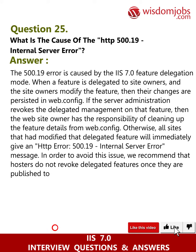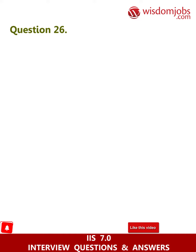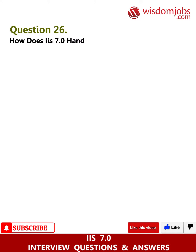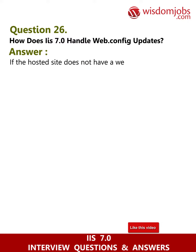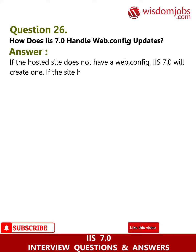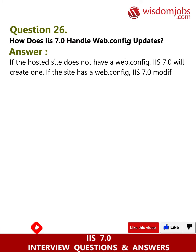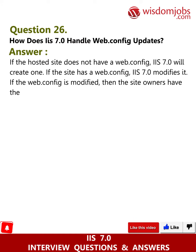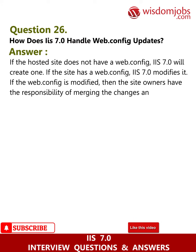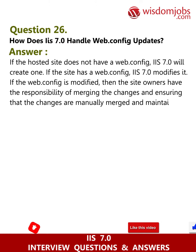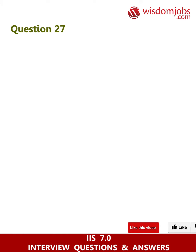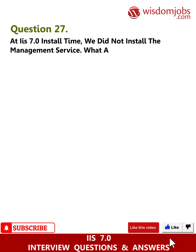To avoid the HTTP 500.19 issue, we recommend that hosts do not revoke delegated features once they are published to end customers. Question 26: How does IIS 7.0 handle web.config updates? Answer: If the hosted site does not have a web.config, IIS 7.0 will create one. If the site has a web.config, IIS 7.0 modifies it. If web.config is modified, the site owners have the responsibility of merging and maintaining the changes manually.